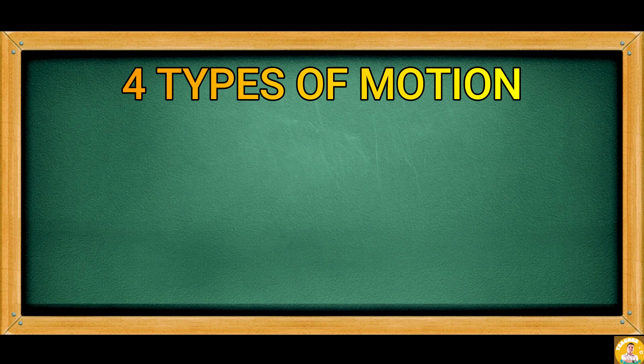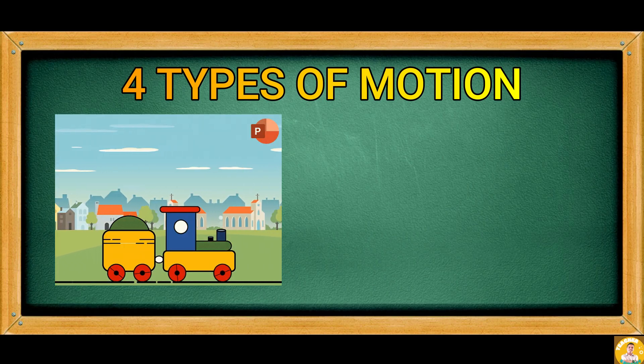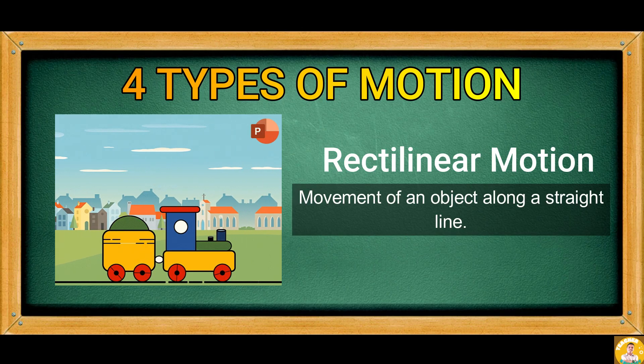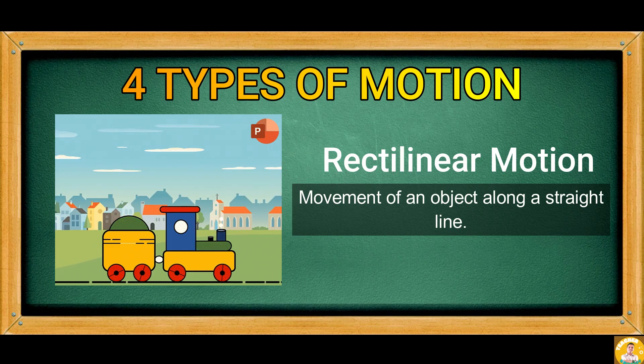There are four types of motion. The first picture is a moving train on its track which is an example of a rectilinear motion. In rectilinear motion, movement of an object is along a straight line.